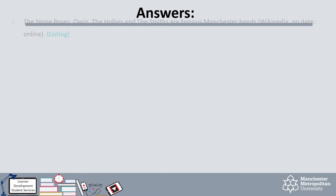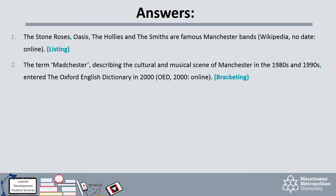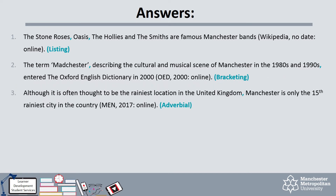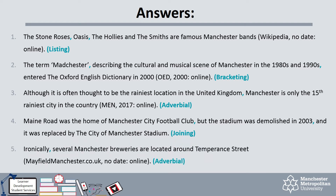Here are the answers. Number one uses listing commas to separate the different bands. Number two is bracketing — it contains extra information, and if we remove it the sentence would still make sense. Number three is an adverbial comma; the first part gives a little bit of extra context or background that puts the complete clause afterwards into fuller context. Number four joins two complete sentences together — don't forget there is a FANBOYS conjunction there: the word 'but'. Finally, number five is an adverbial, giving extra context or background at the beginning — the word 'ironically'.